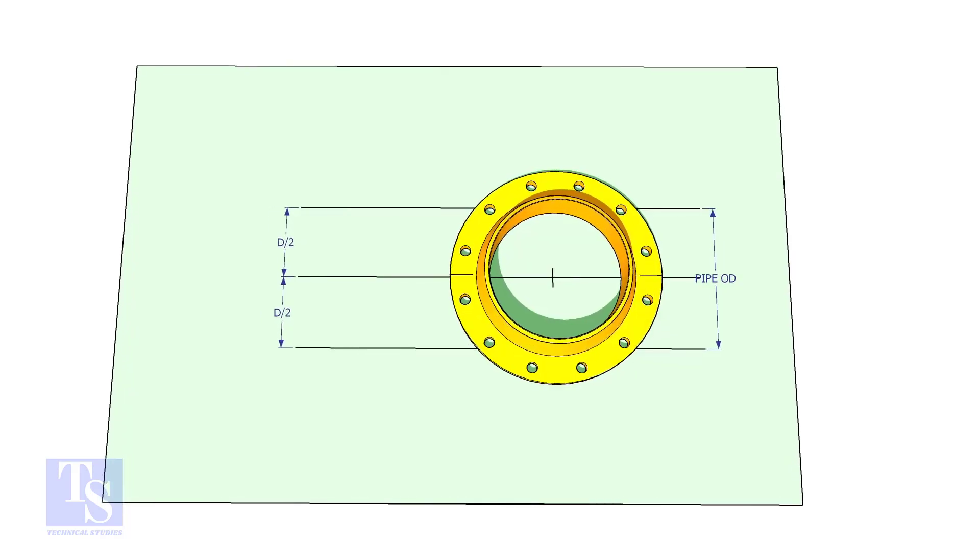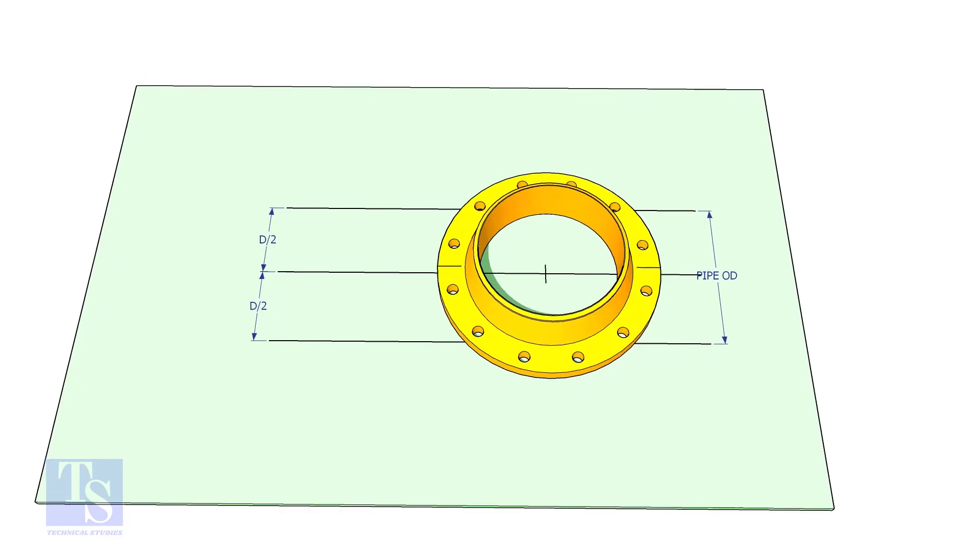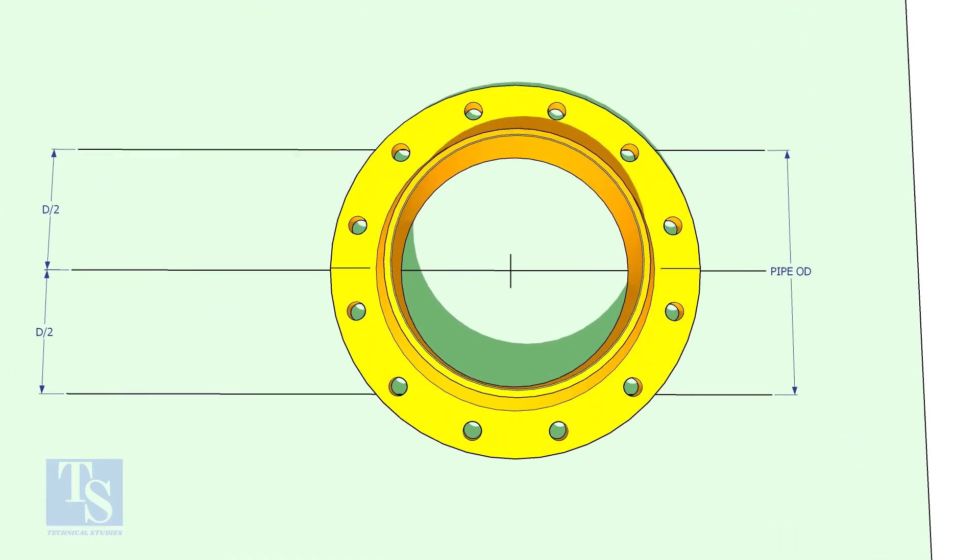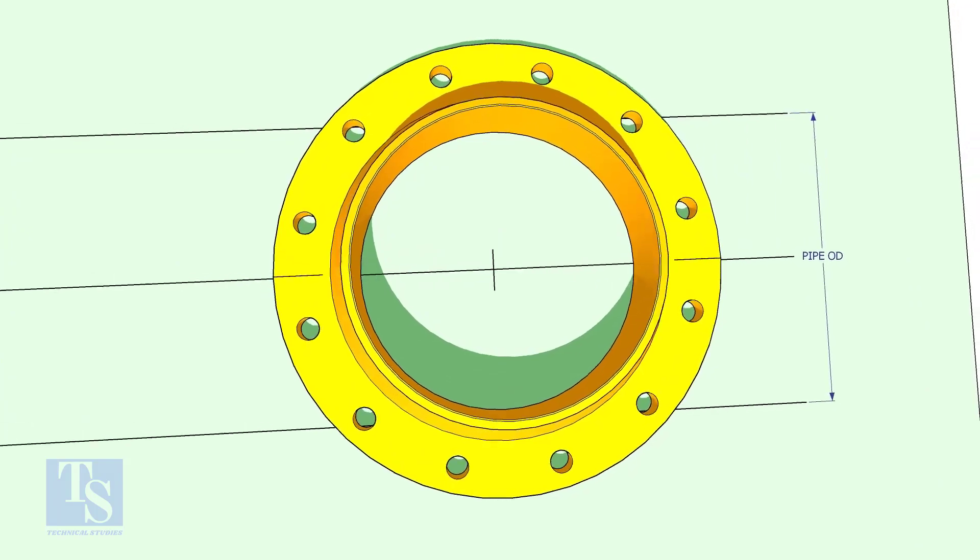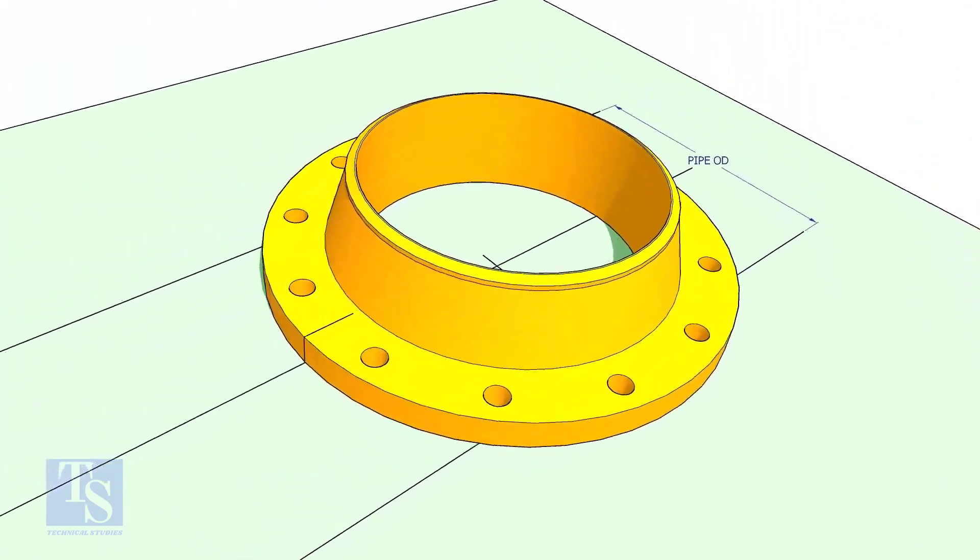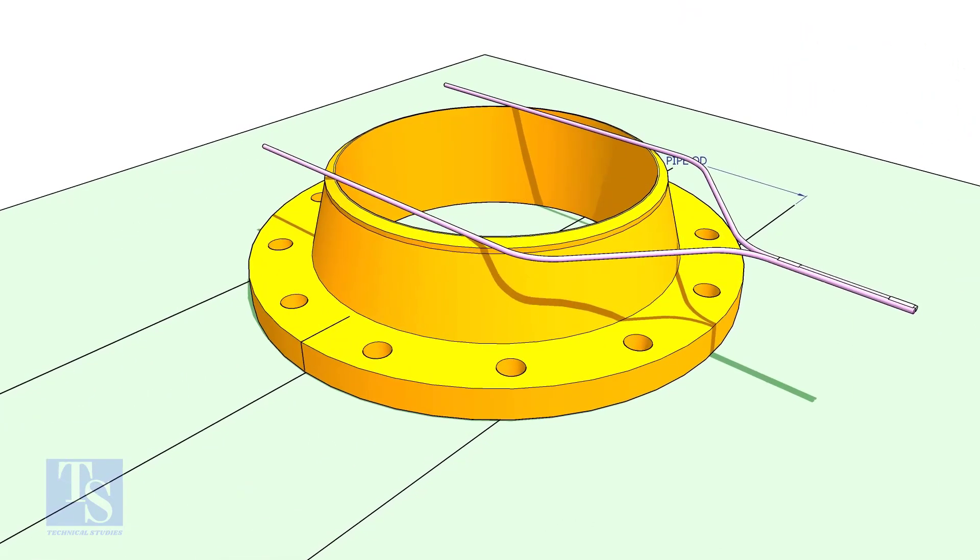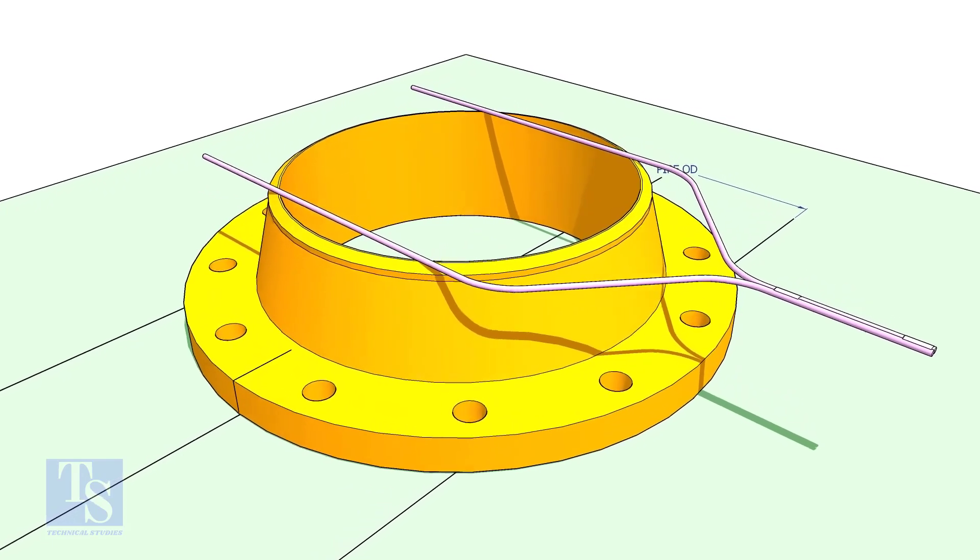Put the flange on the plate as shown and match the center line of the flange and the line on the layout. Put the gap rod and elbow on the flange.